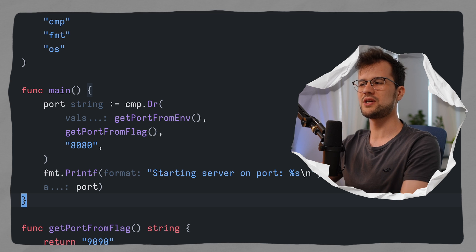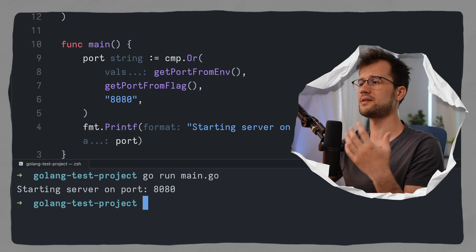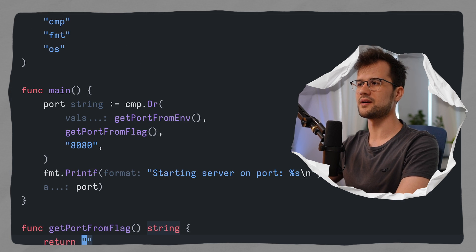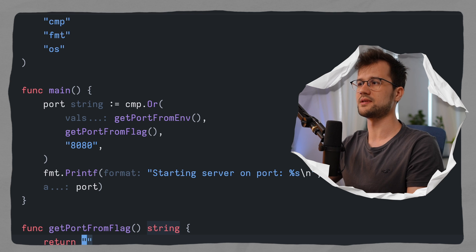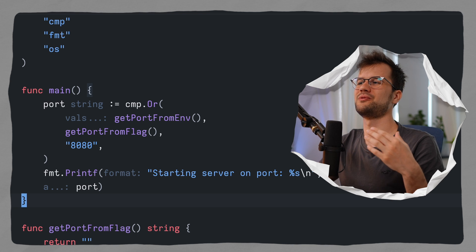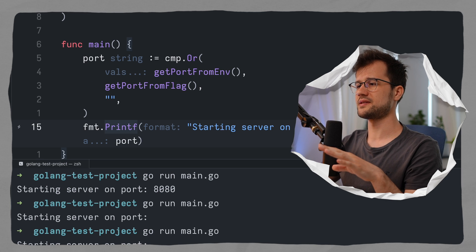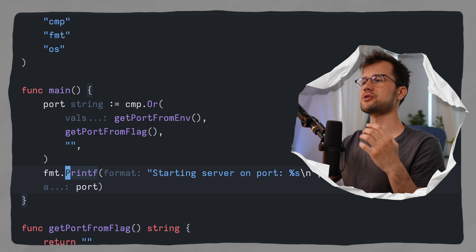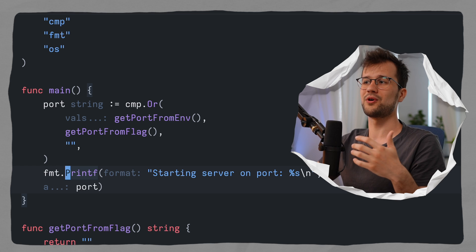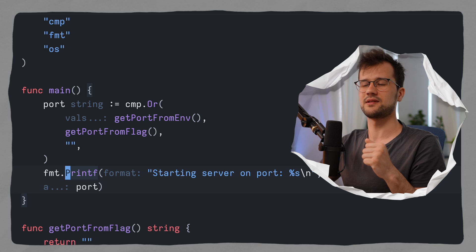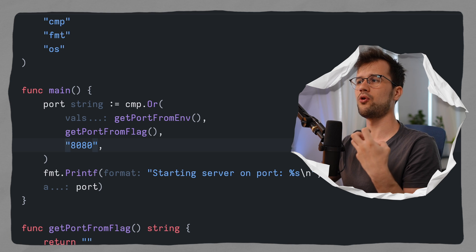What if we just remove this 9090 and just return an empty string? If we run this again, we get 8080 back — because 8080 is the first non-zero value in our cmp.or arguments list. And what if we also insert an empty string for 8080? If we just test this, we will get an empty string. The reason is that the cmp.or function always selects the last value in the arguments list whenever there is no possible non-zero value — so in this case, it just returned the empty string.